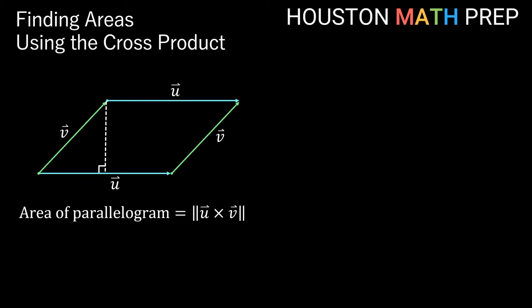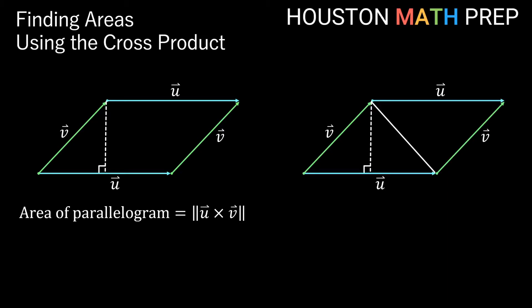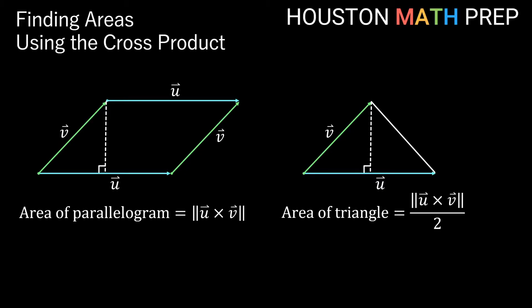If the magnitude of the cross product of two vectors equals the area of the parallelogram with those vectors as adjacent sides, what do we notice if we cut a parallelogram in half? We have half our parallelogram on each side of that line — in other words, half a parallelogram cut this way gives us a triangle defined by vectors u and v. So we can find the area of a triangle defined by two vectors by taking half the magnitude of the cross product, since a triangle is half of a parallelogram.